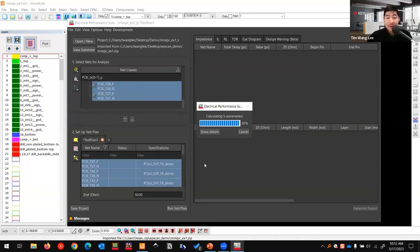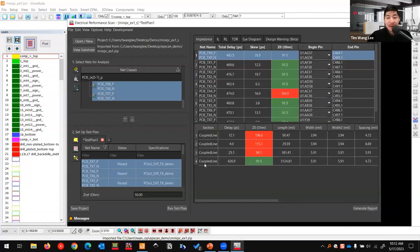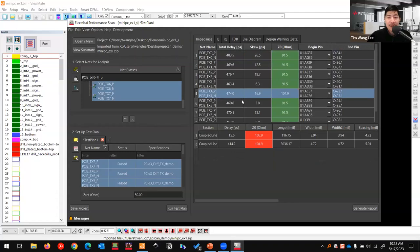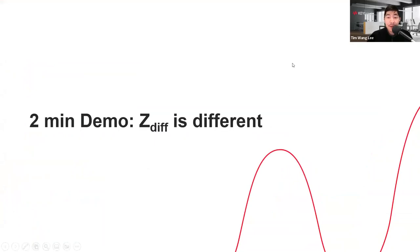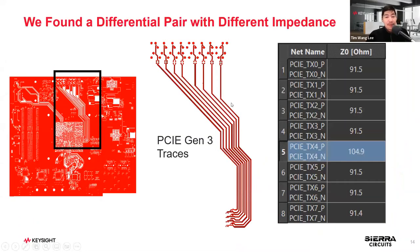Look at here, PCIe TX4 is different than all the other ones. It's 104 instead of 91. That's our demo. So we have a differential impedance that is different.